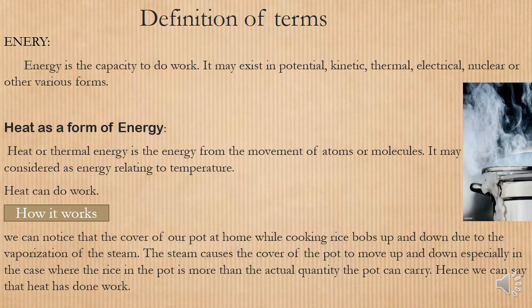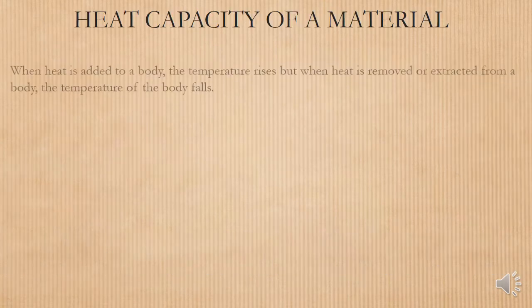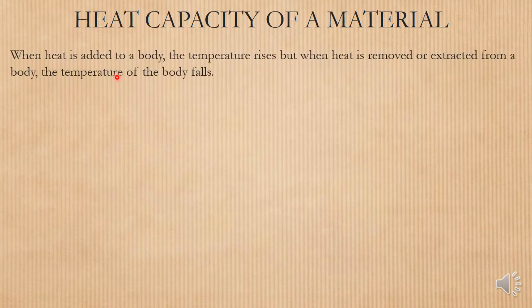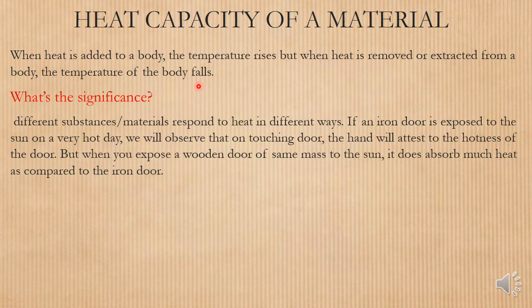Heat capacity of a material: when heat is added to a body the temperature rises, but when heat is removed or extracted from a body the temperature of the body falls. What is the significance of this? Different substances respond to heat in different ways.